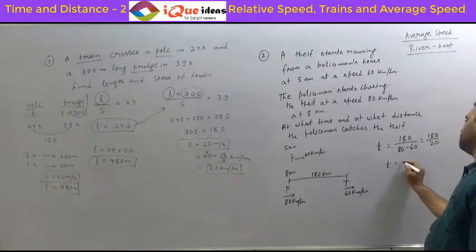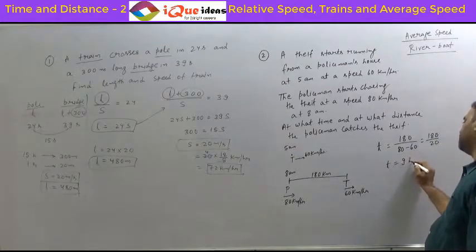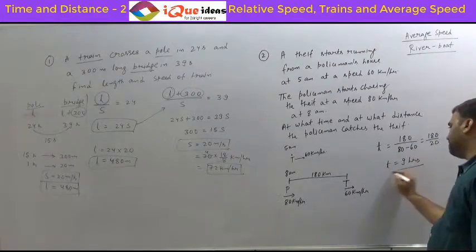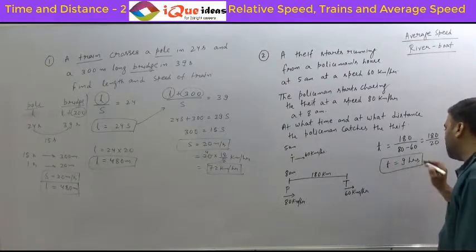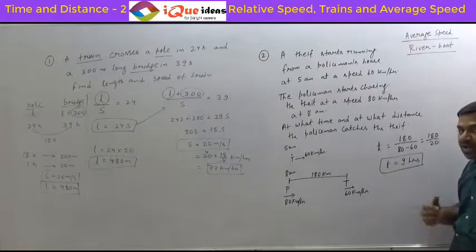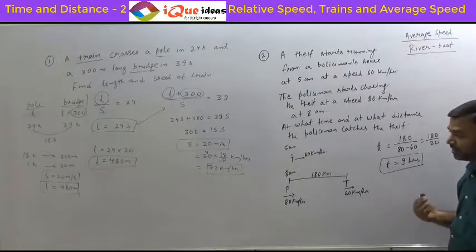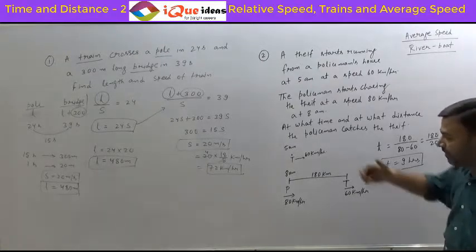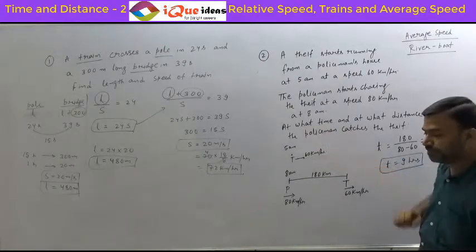So the time is equal to 9 hours. That means the thief will be caught after 9 hours. But 9 hours from what — 5 a.m. or 8 a.m.?